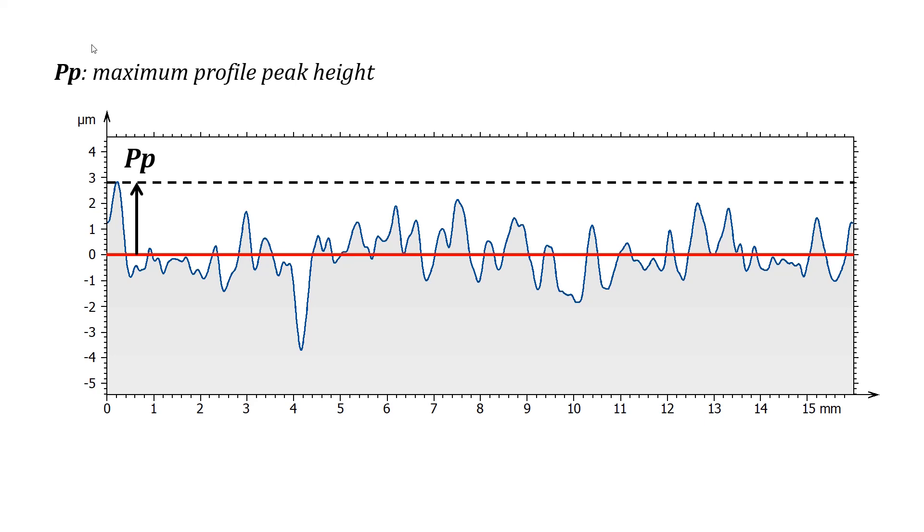Similarly, the deepest extension below the mean line defines parameter pv, called maximum profile valley depth. The value of pv is positive because it is counted as a depth, downward from the mean line. The suffix v in pv stands for valleys.